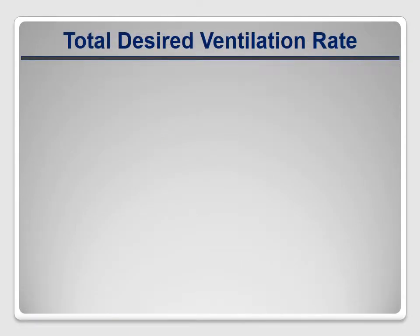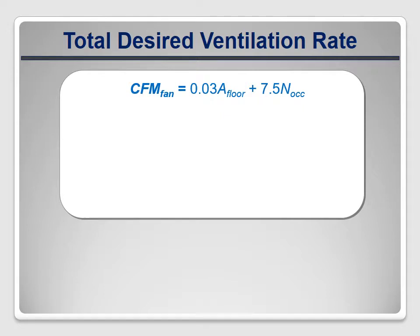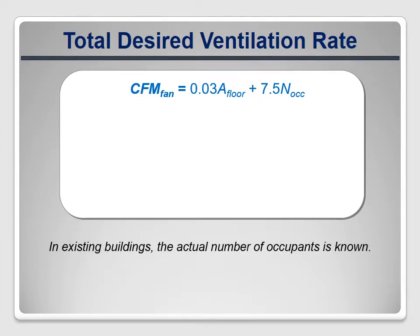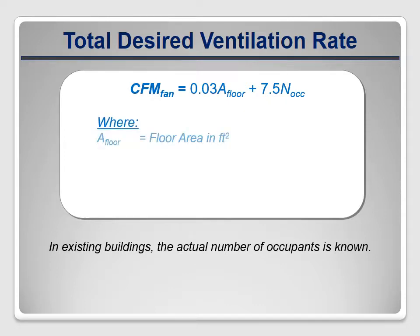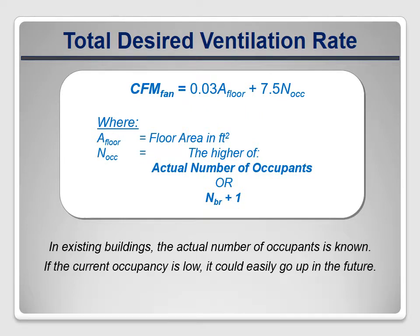There's also a change to the base equation. The total desired ventilation rate can now consider the actual number of occupants, since it's known in existing buildings. The standard says to consider the actual number of occupants and the number of bedrooms plus one — use whichever number is higher. This makes sense: if there are more people actually living in the house, provide more ventilation; but if current occupancy is low, base the rate on the number of bedrooms, since occupancy could easily go up in the future.